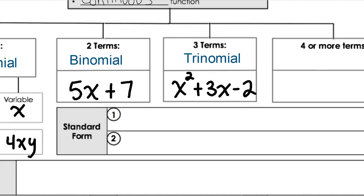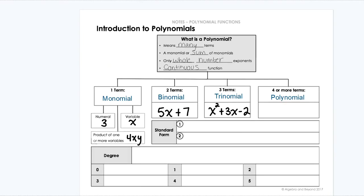And then our last one: anything with four or more terms is going to be called a polynomial. So that's going to be called a polynomial.